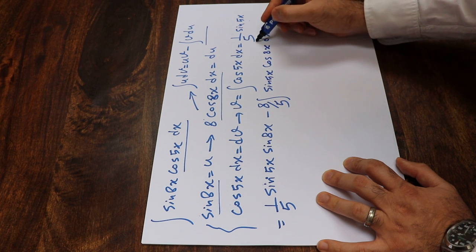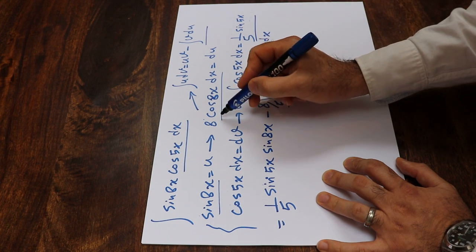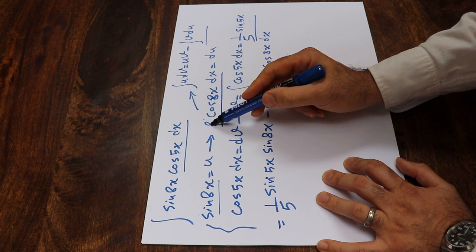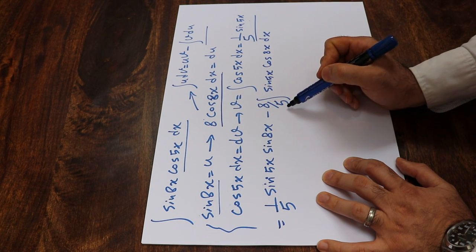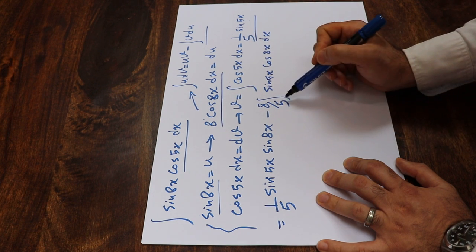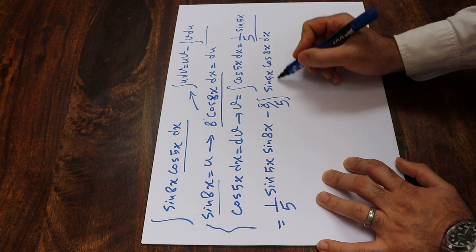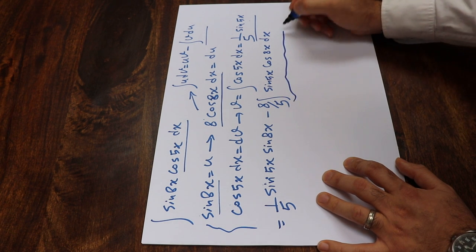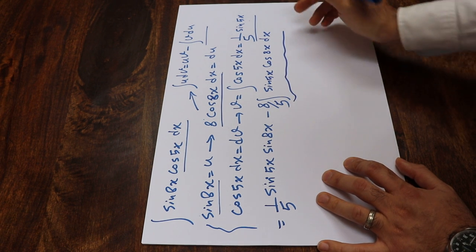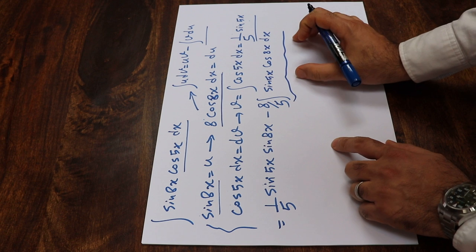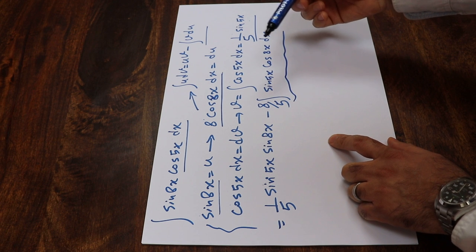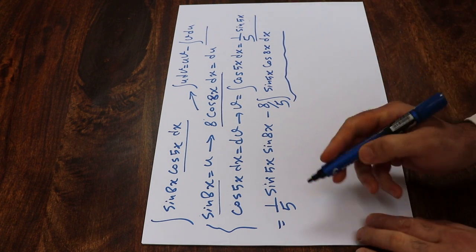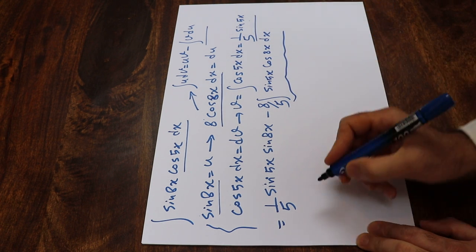So 8 times 1 divided by 5, that is 8 divided by 5. I take it out of the integral because it's a constant. That is v, sine 5x, times du, cosine 8x dx. So the second term is the integral of v du, which is v times du, and 8 divided by 5 is constant, taken outside the integral. Now you need to solve this remaining integral by applying integration by parts one more time.